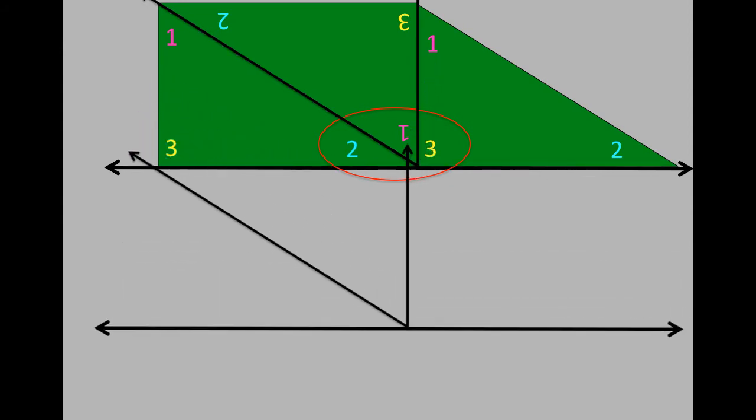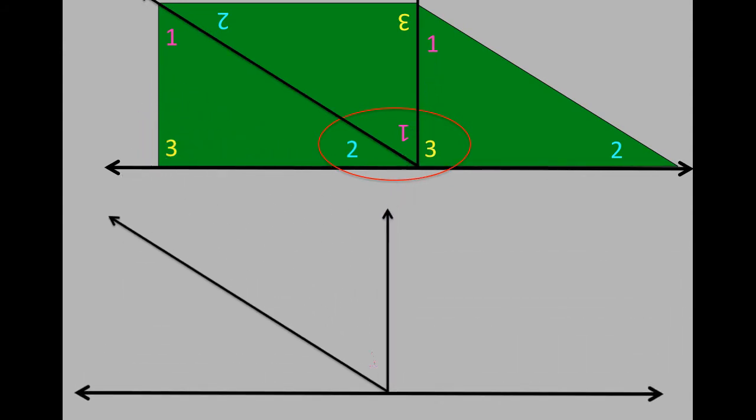And so when I pull out this angle and I label them 1, 2, and 3, you're going to see that the measure of angle 1 plus the measure of angle 2 plus the measure of angle 3 is equal to 180.